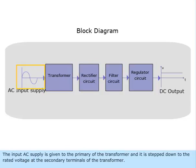The input AC supply is given to the primary of the transformer and it is stepped down to the rated voltage at the secondary terminals of the transformer.